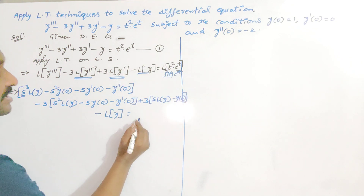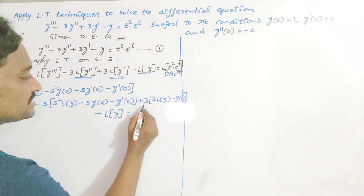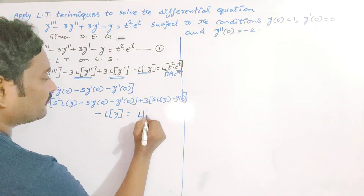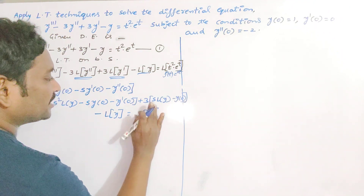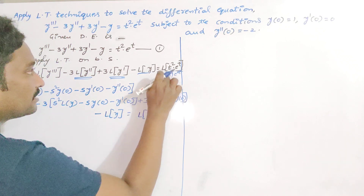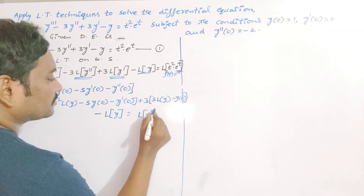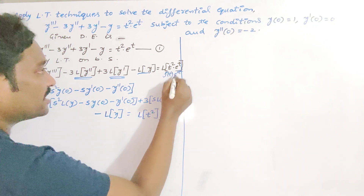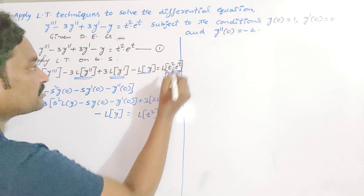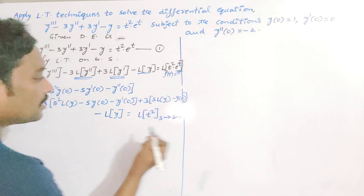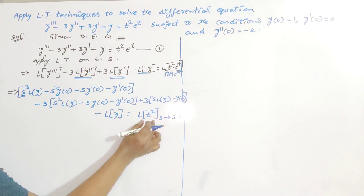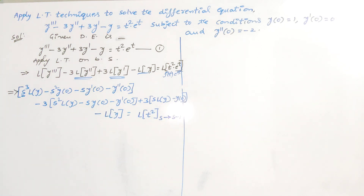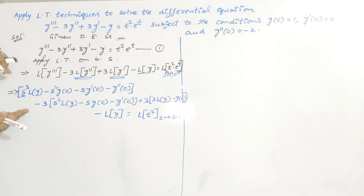According to the first shifting theorem on Laplace transforms, this is L{f(t)} where f(t) = t squared. In this Laplace transform, we replace S by S minus a, and the value of a is the coefficient of t, which is 1. So we replace S by S minus 1. This is the critical part of the solution — if you write the formula perfectly, we will surely get the exact answer.